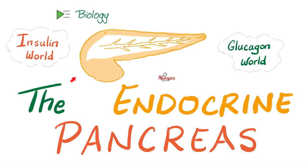What's going on? This is Medicosis Perfectionist, where medicine makes perfect sense. Let's resume our biology playlist. In previous videos, we have talked about the thyroid gland, the parathyroid gland, and the adrenal gland. Today, it's time to talk about the endocrine pancreas — the insulin world versus glucagon world.